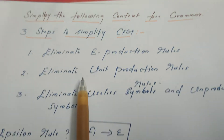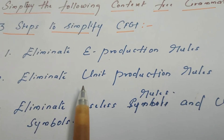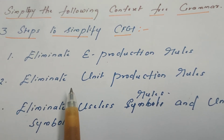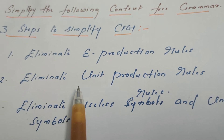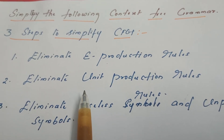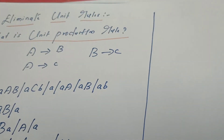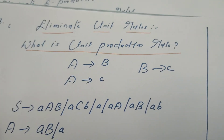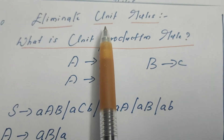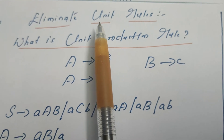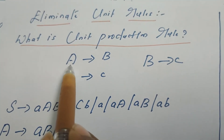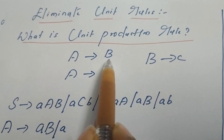We have already made a video on how to eliminate null productions. Now let us move on to the step to eliminate unit production rules. Now let us see how to eliminate unit production rules — but first, what is a unit rule?